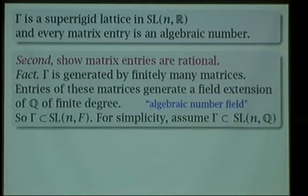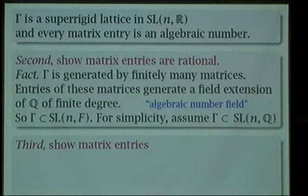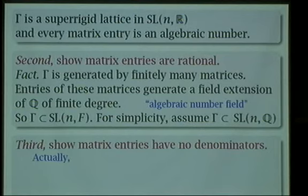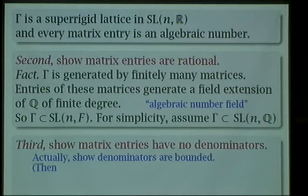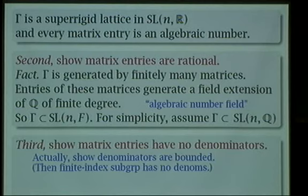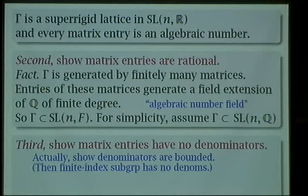We now know that all the entries are rational. The last thing is to show the matrix entries are integers. If you've got rational numbers and want to show they're integers, you want to show they have no denominators. I'm not going to show that directly — I'm going to show that the denominators are bounded. Then it's an exercise that if in all of Gamma the denominators are bounded, there's a finite index subgroup of Gamma with denominator one. Since Gamma is finitely generated, the denominators of matrix entries in the generators involve only finitely many primes. When you multiply or add rational numbers, if a prime wasn't in the denominator of any of those numbers, it can't appear in the denominator of their products.